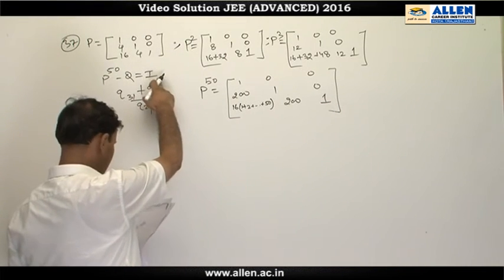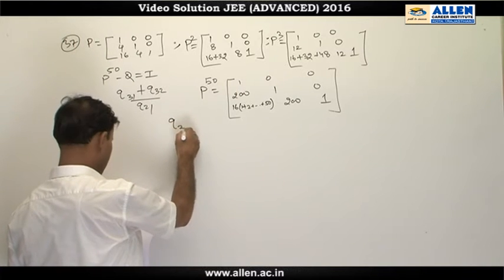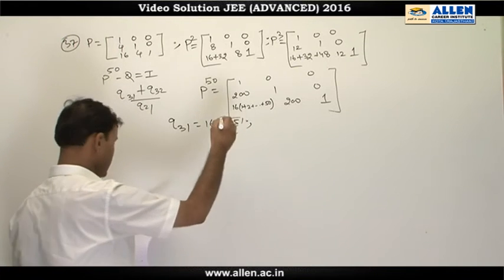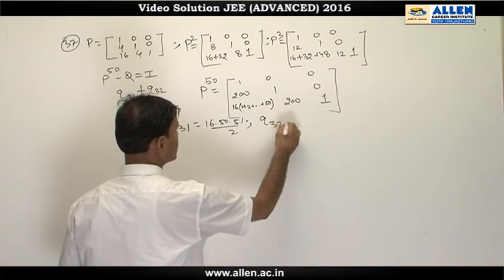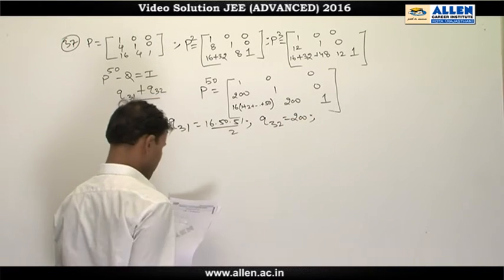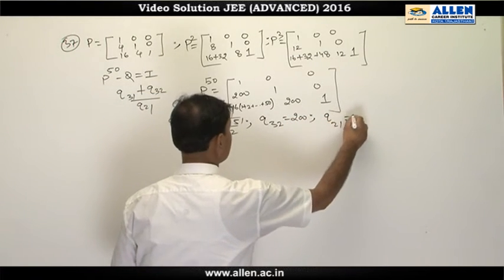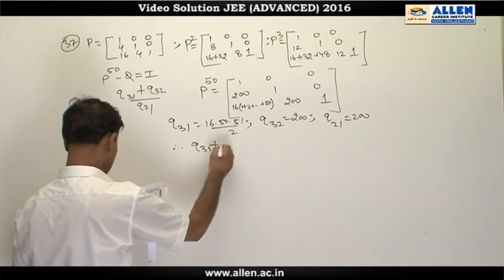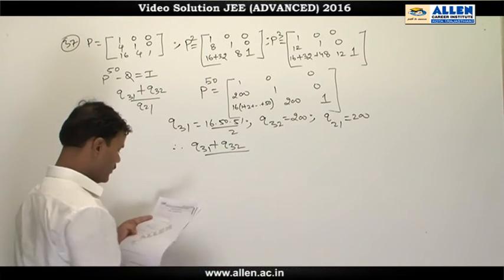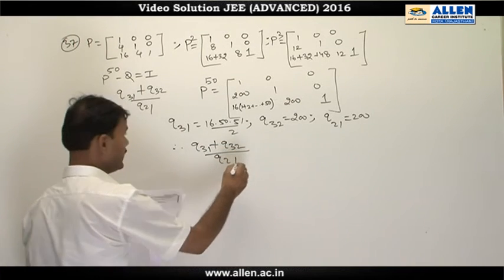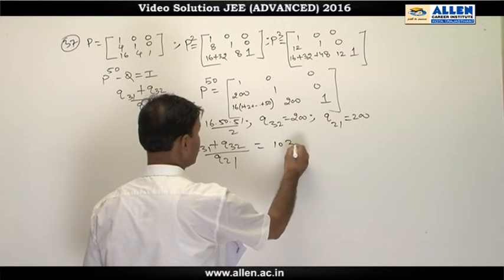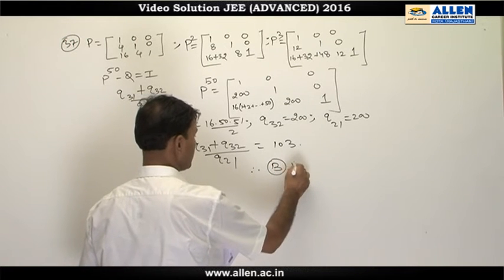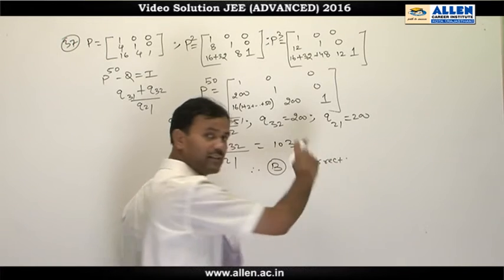From this relation, element Q31 = 16 × (50 × 51)/2, element Q32 = 200, and element Q21 = 200. Therefore (Q31 + Q32) / Q21 equals 103, so option B is correct.